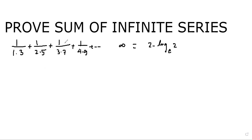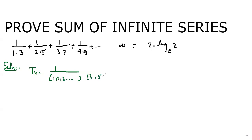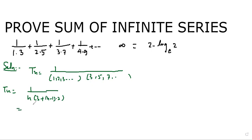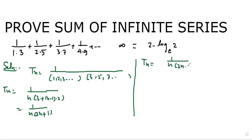To solve this series, we take the nth term. The first term follows a pattern, so the nth term becomes 1/(n(2n+1)). We identify the arithmetic progression in the denominators: n and 2n+1, giving us the nth term as 1/(n(2n+1)).